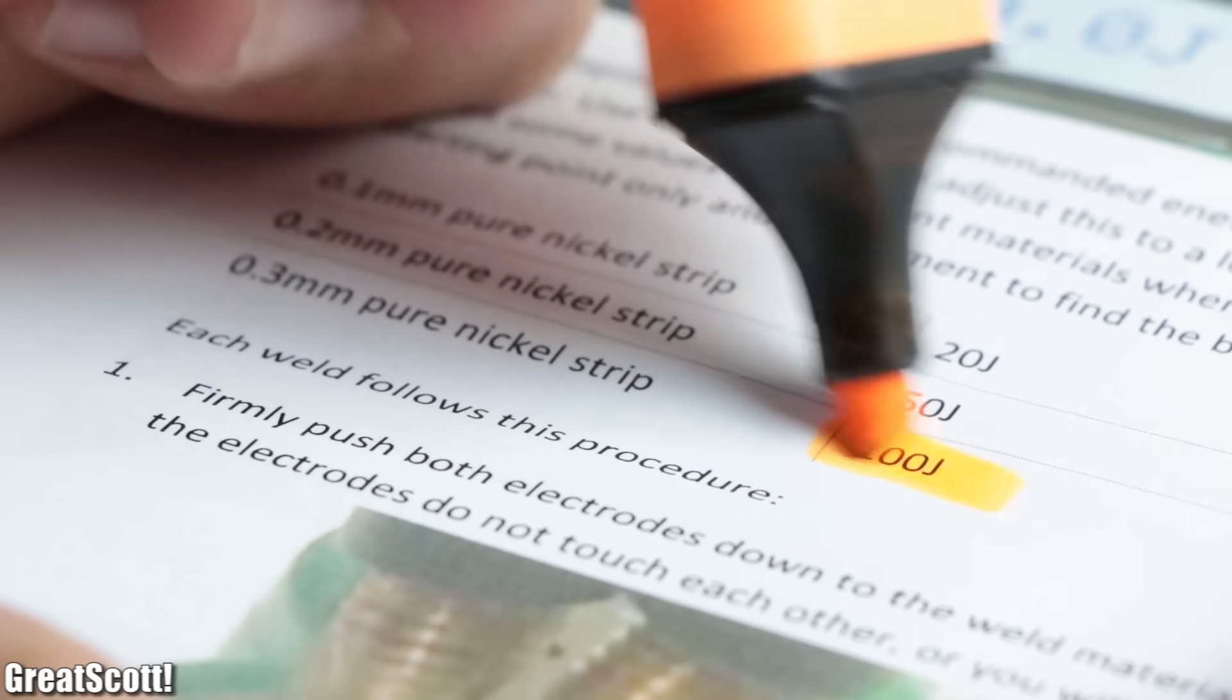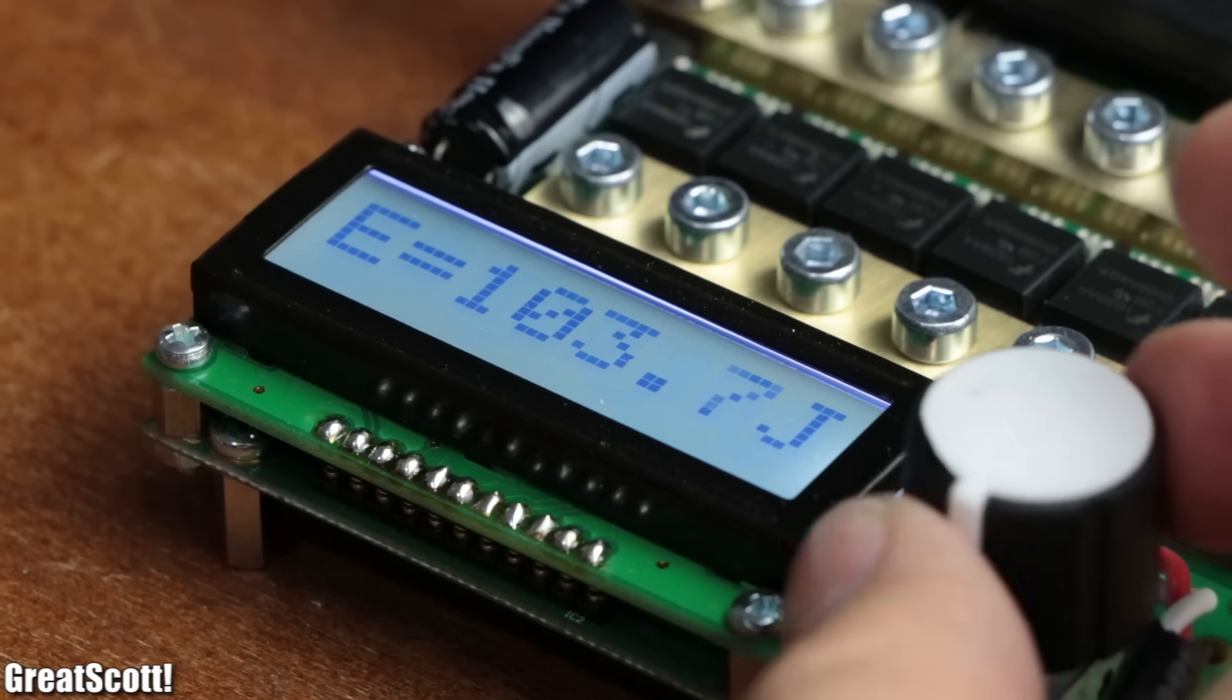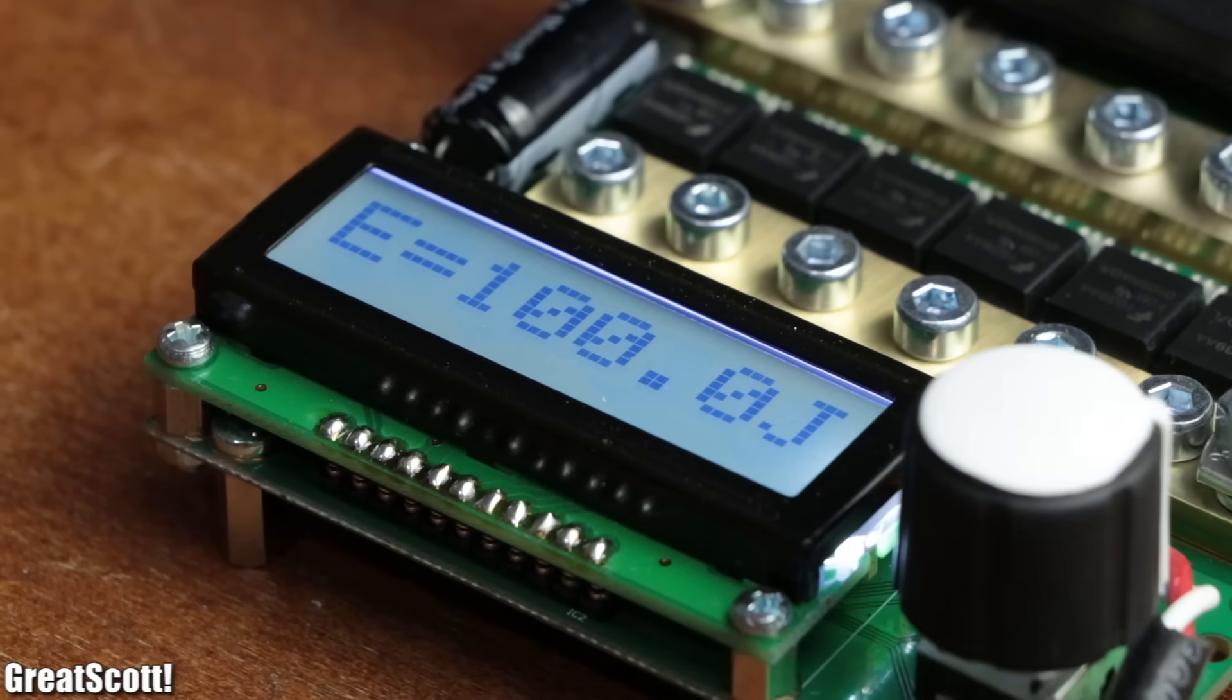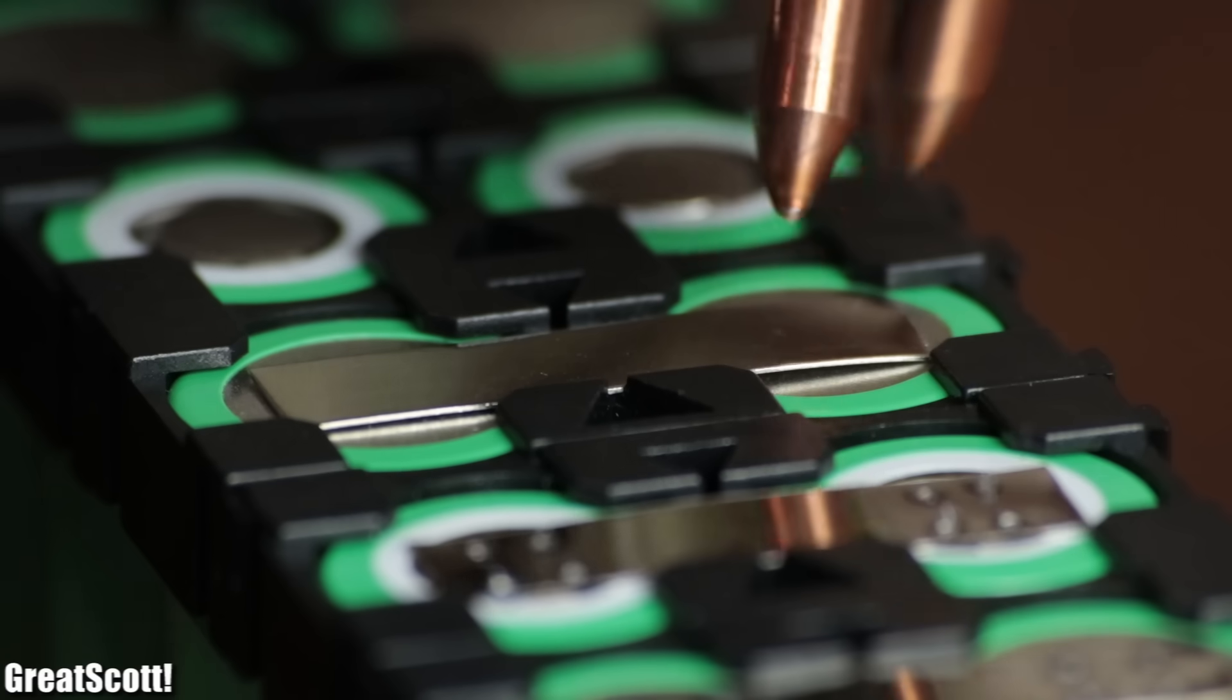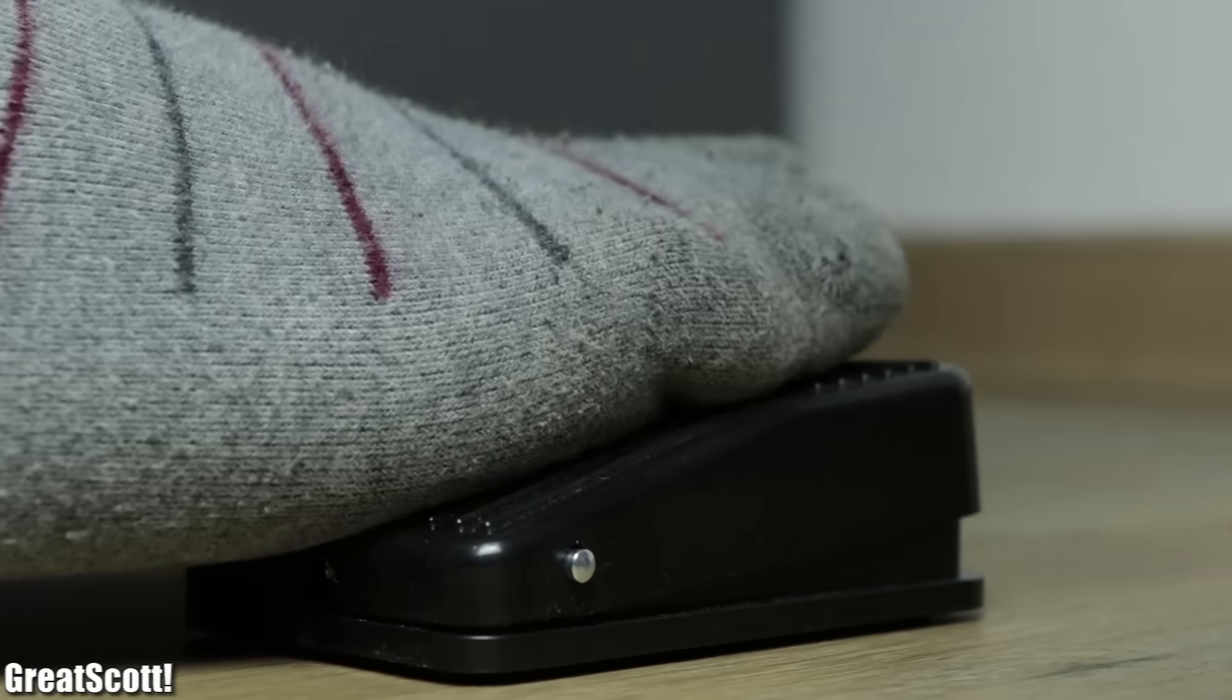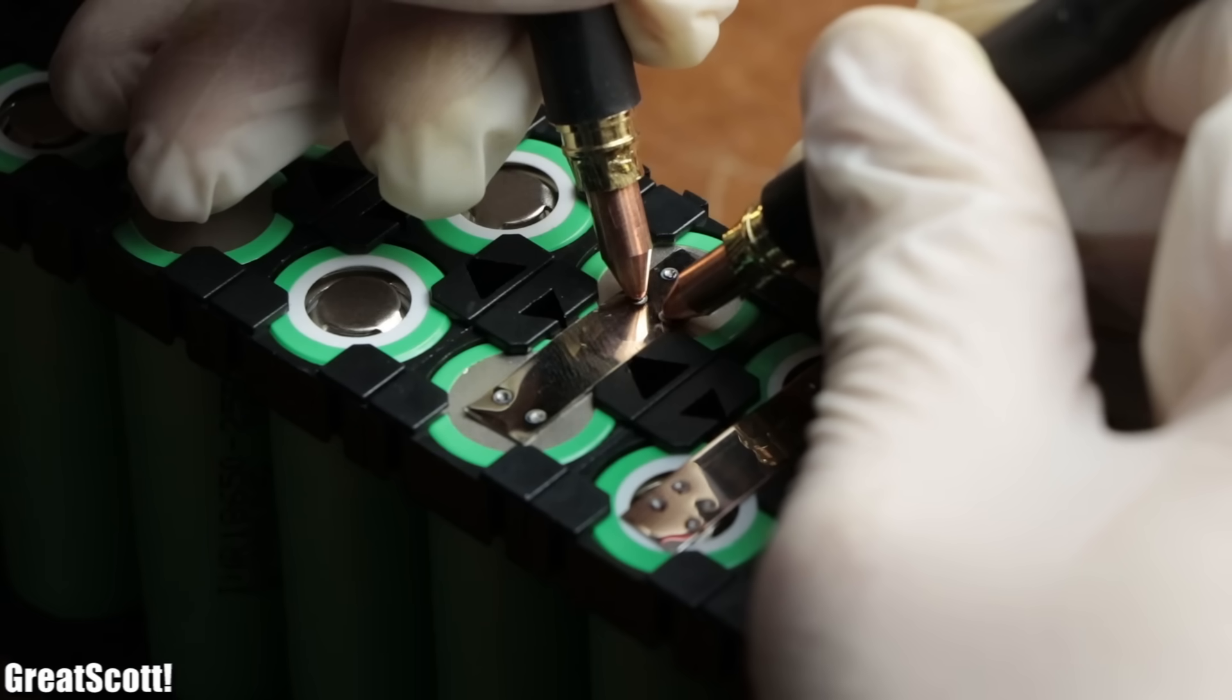According to its manual, it is recommended to use an energy of 100 joules for 0.3 millimeter nickel strips, which I used as a standard value for all my battery pack welds. And as you can see here, creating the welds is really not that complicated. Simply press the electrodes onto the metal with a distance of roughly 3 millimeters to one another, push the foot switch, and there you go.